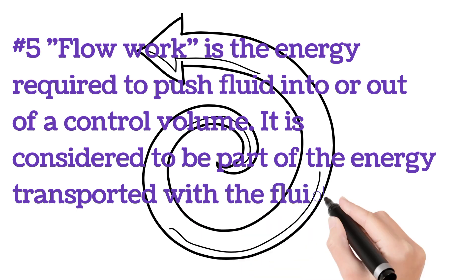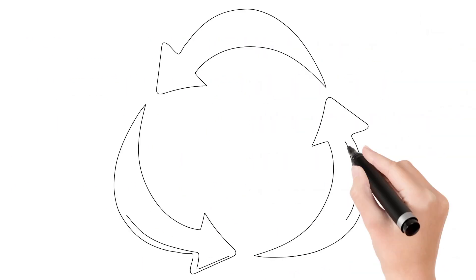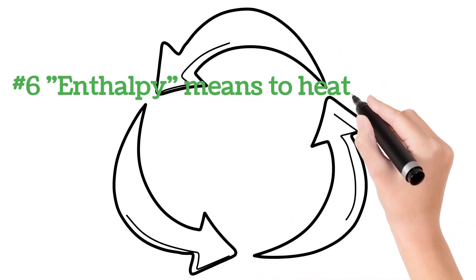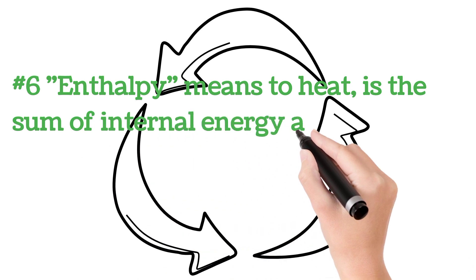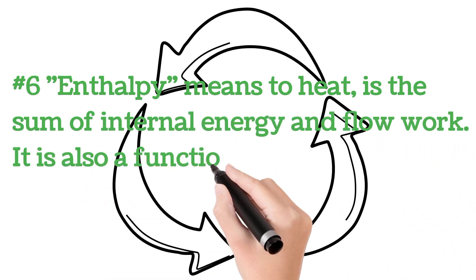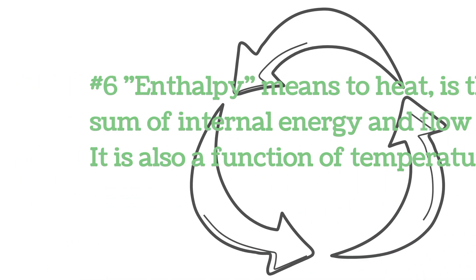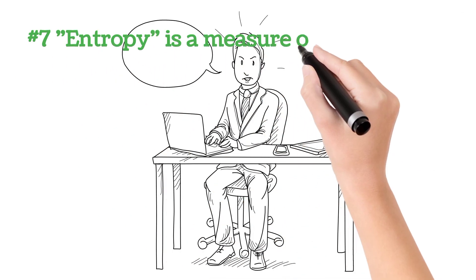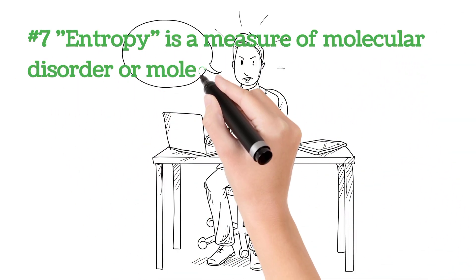Number six: enthalpy. Enthalpy, meaning 'to heat,' is the sum of internal energy and flow work. It is also a function of temperature. And last, number seven: entropy. Entropy is a measure of molecular disorder or molecular randomness.